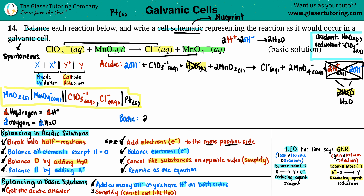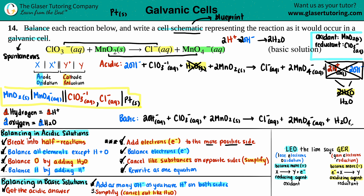The final balanced equation in basic solution is: 2OH⁻ (aq) + ClO₃⁻ (aq) + 2MnO₂ (s) → Cl⁻ (aq) + 2MnO₄⁻ (aq) + H₂O (l). This problem is complete.